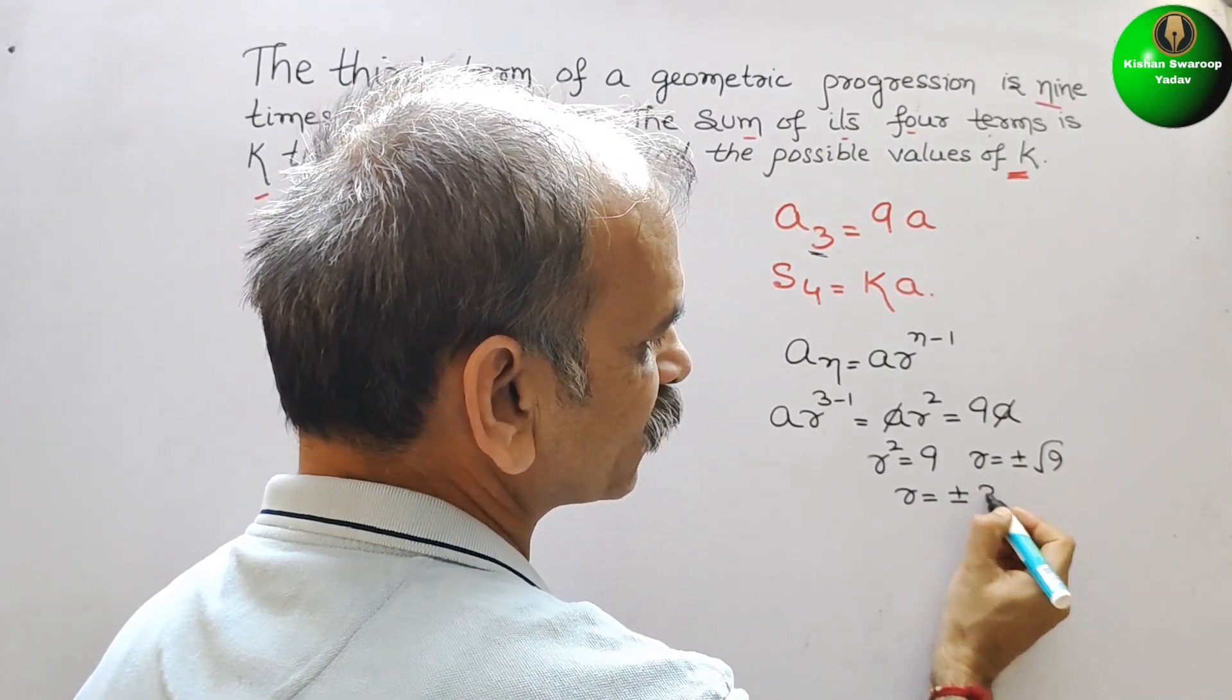Now you can see a and a gone. So we can say ar² is equal to 9. r is equal to plus minus root 9. So we can say r is equal to plus minus 3.